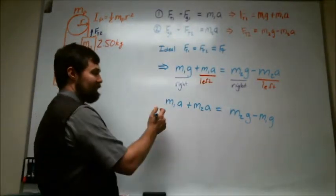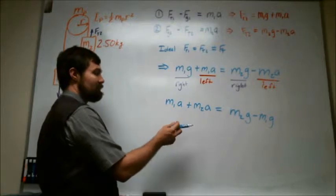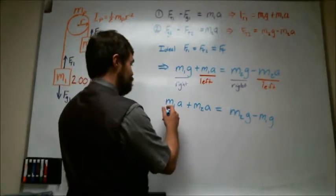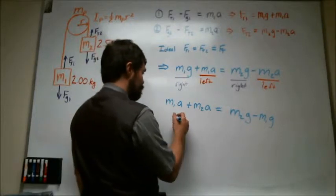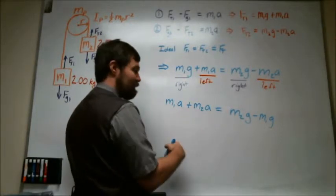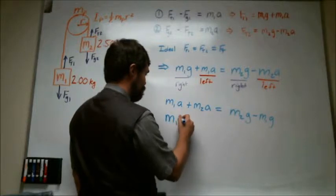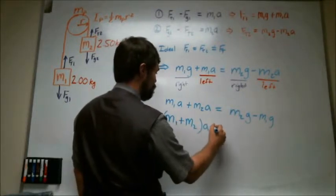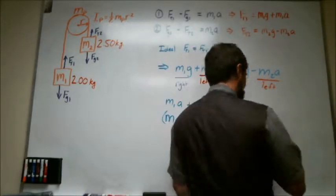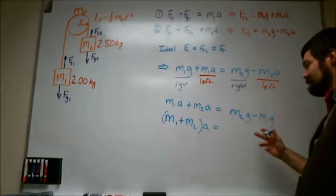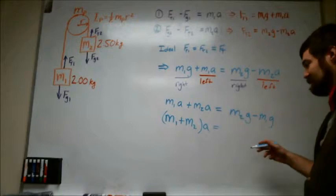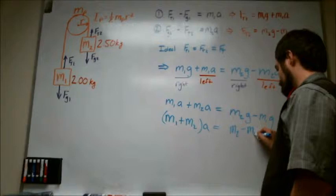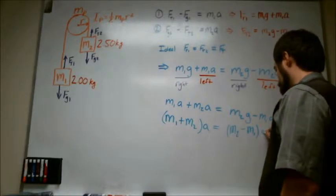And so this side that has m1a plus m2a, the a side if you will, basically you want to distribute the a. And so that's going to look like (m1 + m2)a. And then this other side, the g side, we want to distribute the g, so (m2 - m1)g.